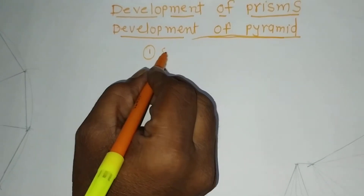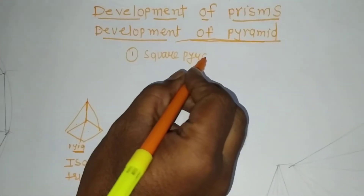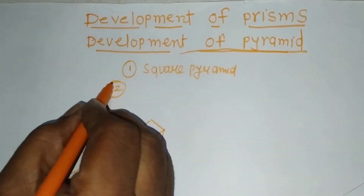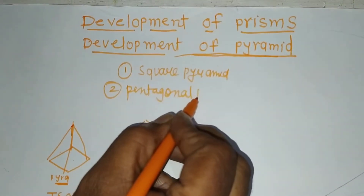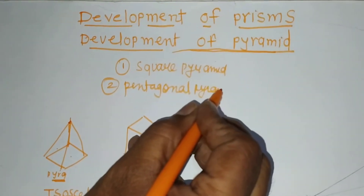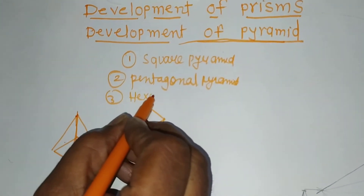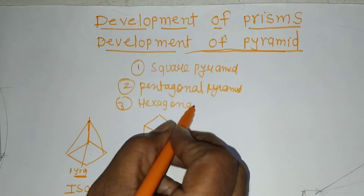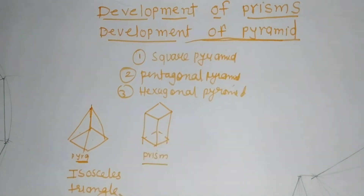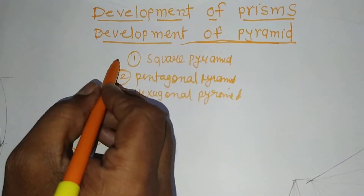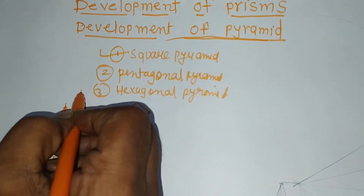Pyramids are: first, square pyramid; second, pentagonal pyramid; third, hexagonal pyramid. Today we will study the development of the square pyramid and hexagonal pyramid.